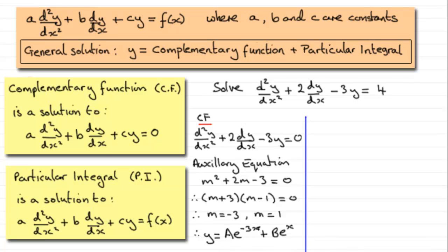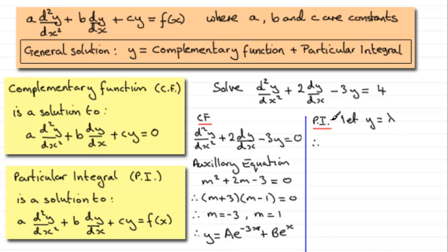Now we need to calculate the particular integral, or PI. For the particular integral we take a trial value for y — this will vary depending on the question. When handling a constant on the right hand side, we let y = λ, where λ is a constant. Differentiating, dy/dx = 0, and differentiating again, d²y/dx² = 0.